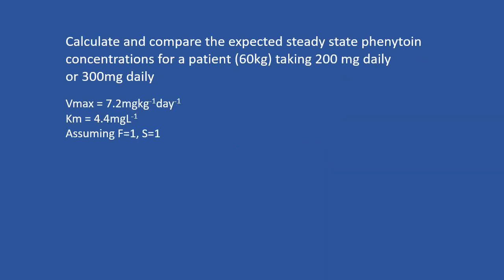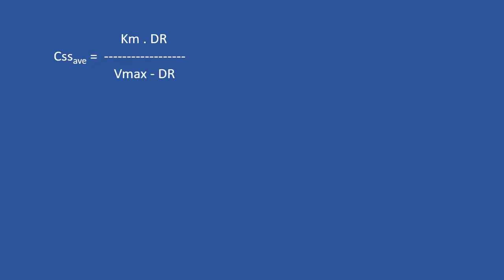In this question you need to calculate the expected steady-state phenytoin concentration for the patient. Pause the video to attempt the question. To calculate the average steady-state concentration, you need to remember this equation. Put in all the values: CSS average equals 4.4 multiplied by the dose, divided by Vmax.